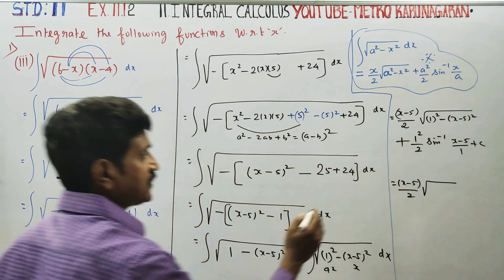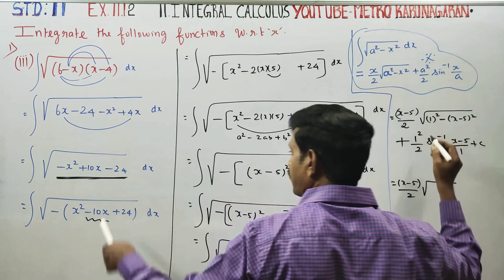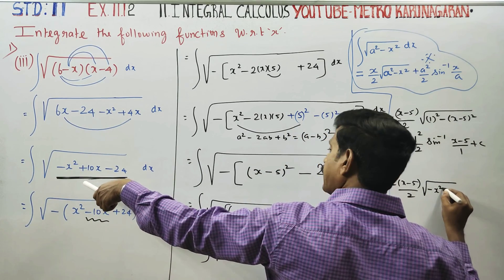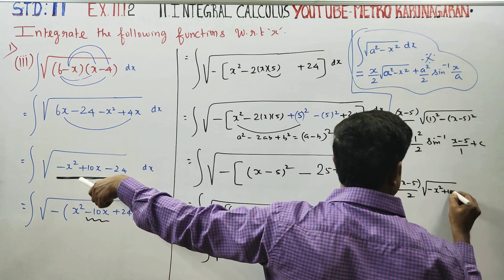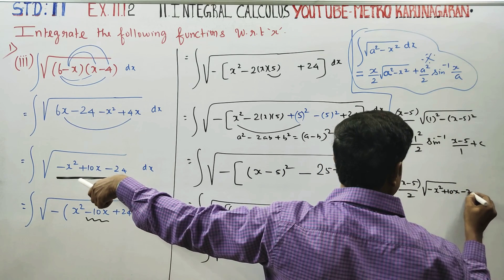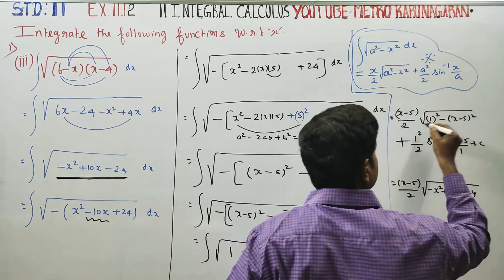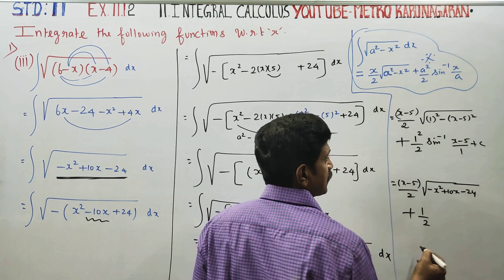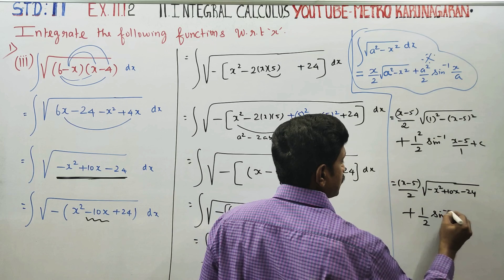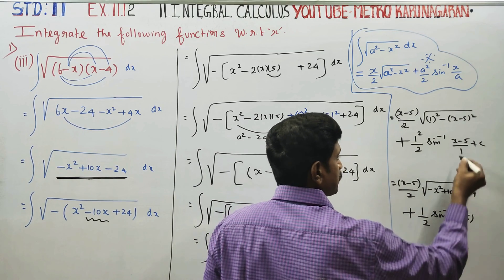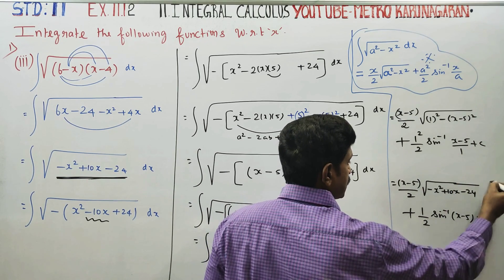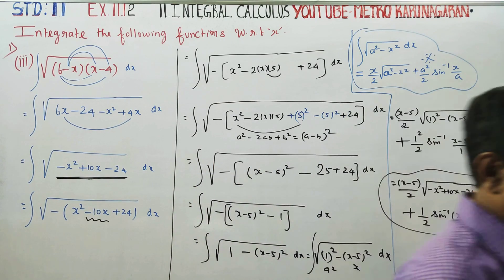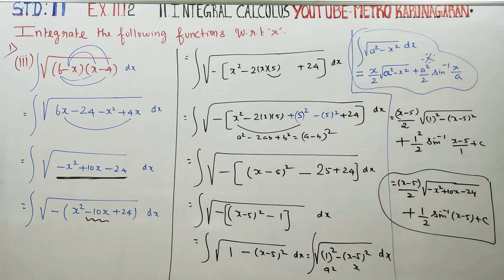In this stage, this simplifies to minus x squared plus 10x minus 24, plus 1 squared by 2, which is sin inverse of (x minus 5) by 1, giving x minus 5 plus c. This is the final answer for this problem. Thank you.